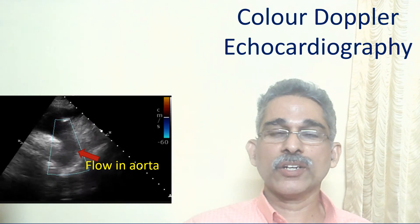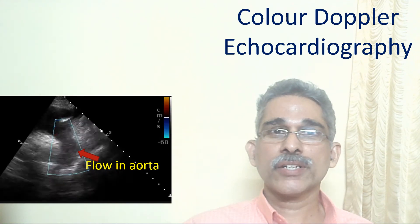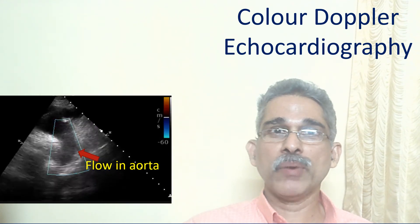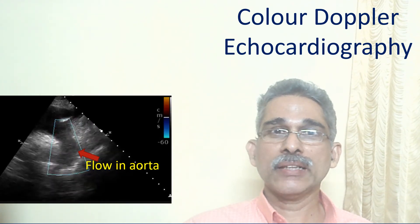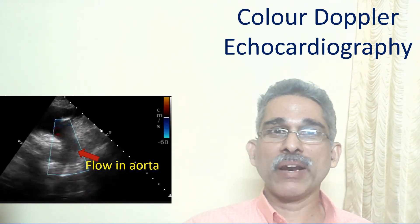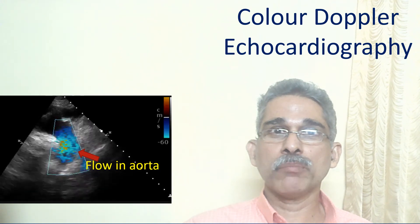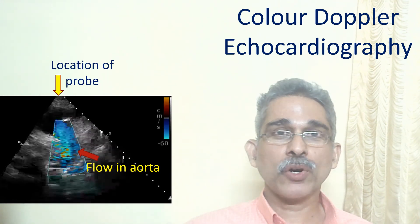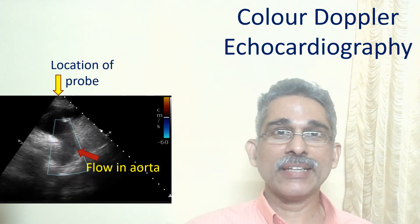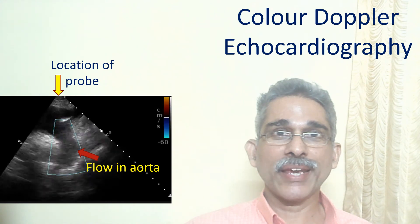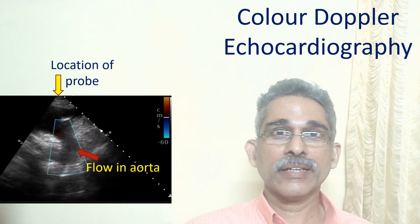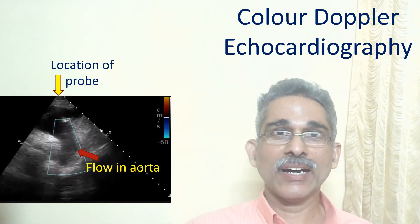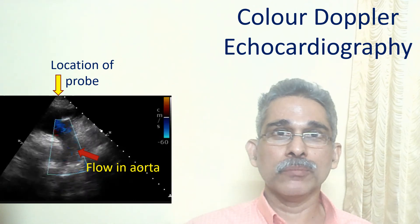This color Doppler shows the downward movement of blood in the largest blood vessel of the body, known as the aorta. As the probe is kept in the upper part, the downward flow in the aorta is color coded blue.